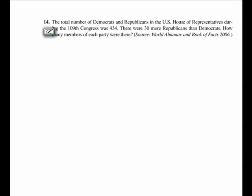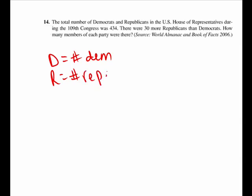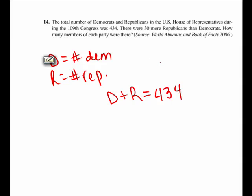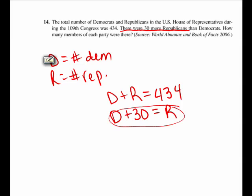Problem 14 gives us two relationships related to two variables. D is the number of Democrats, and R is the number of Republicans in the House of Representatives during a certain period of Congress. The total number of Democrats plus Republicans equals 434. They also tell us there are 30 more Republicans than Democrats, so D plus 30 equals R. My second equation is already solved for R.